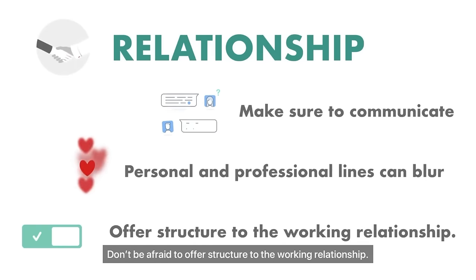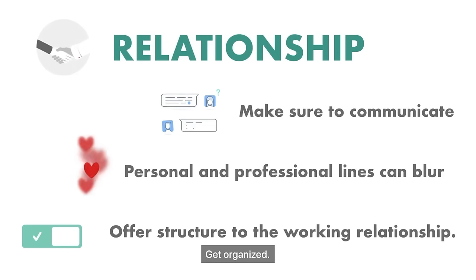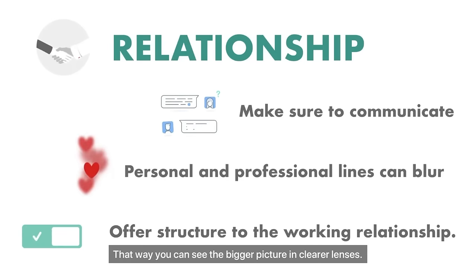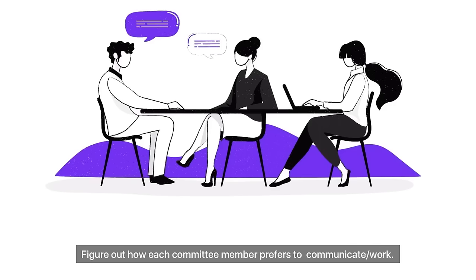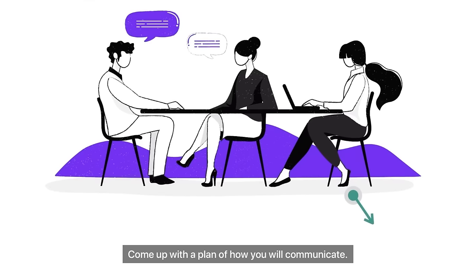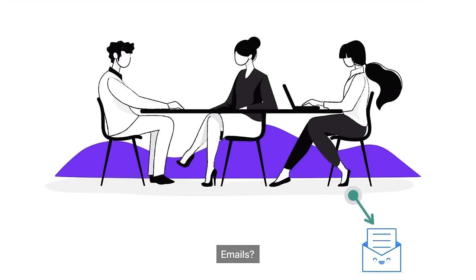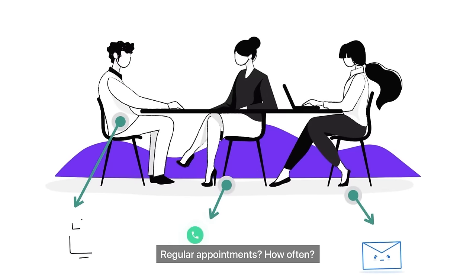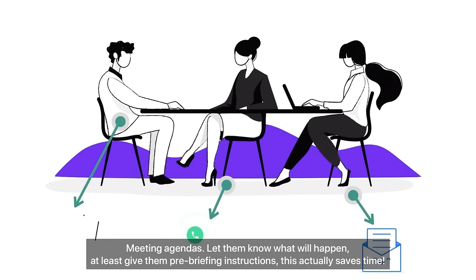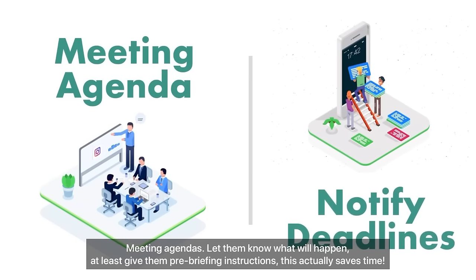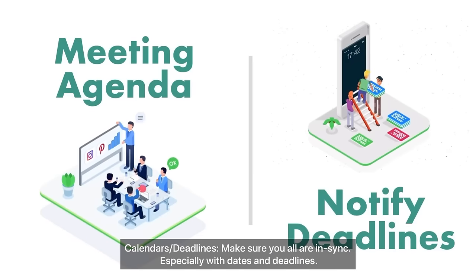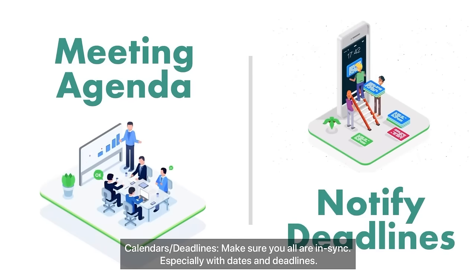Don't be afraid to offer structure to the working relationship. Get organized — that way you can see the bigger picture in clearer lenses. Figure out how each committee member prefers to communicate and work. Come up with a plan: emails, phone calls, regular appointments. How often? Meeting agendas — let them know what will happen, at least give them pre-briefing instructions; this actually saves time. Calendars and deadlines — make sure you all are in sync, especially with dates and deadlines.